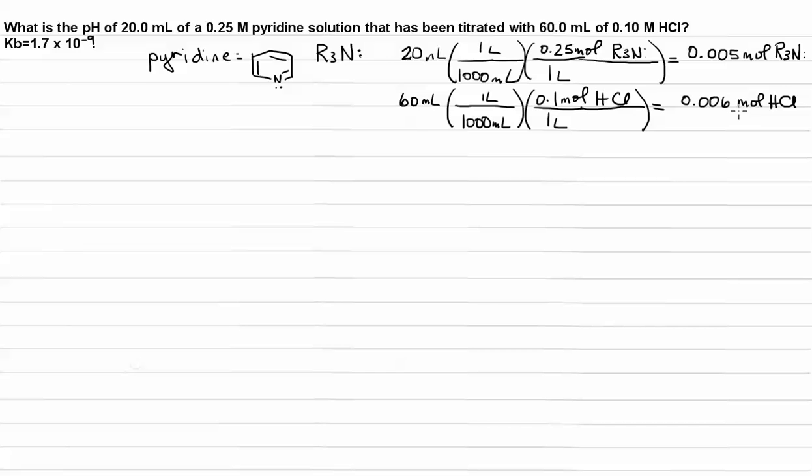So let's see how that impacts our pH. Like I said, we need an IC final table. So let's predict the products of this reaction. What happens when weak base pyridine reacts with strong acid HCl? It's a reaction, not equilibrium. The base pulls a proton off of the acid. That leaves us with R3NH+, conjugate acid of R3N, and chloride ion.